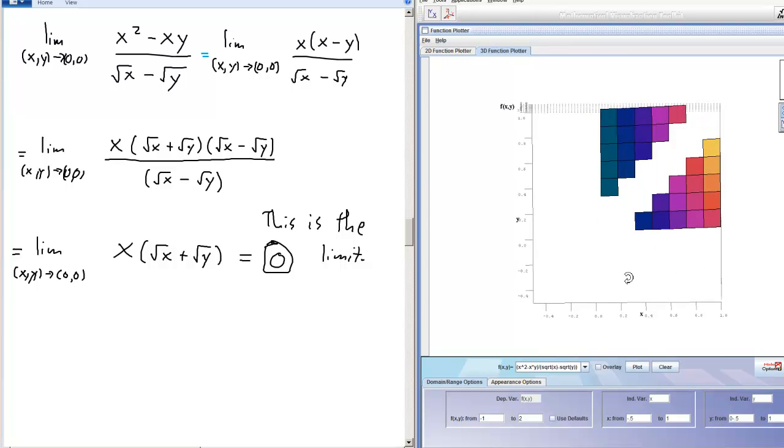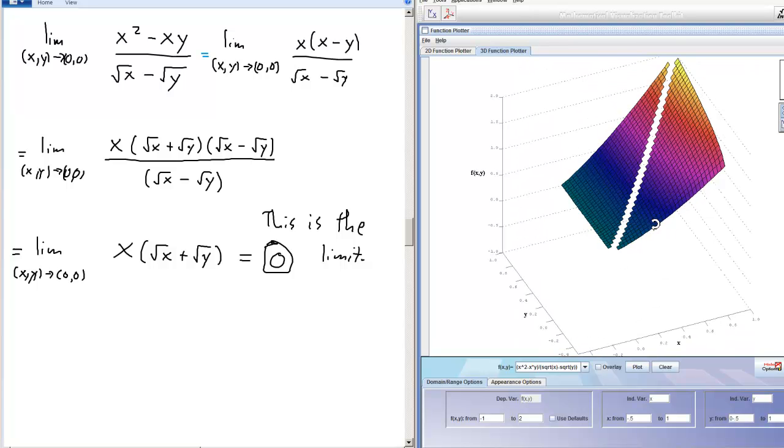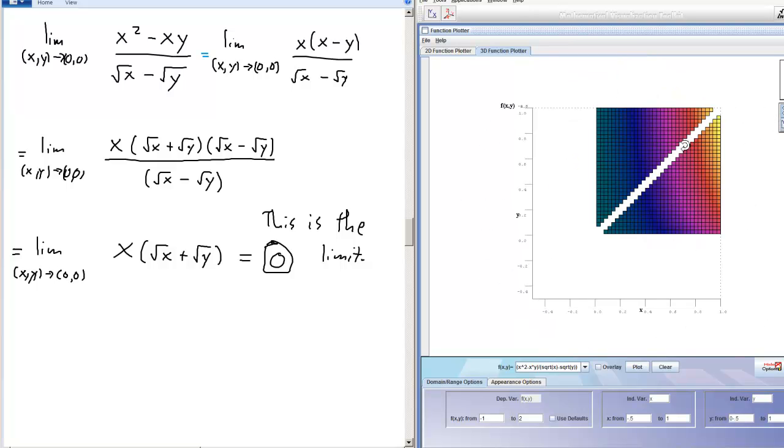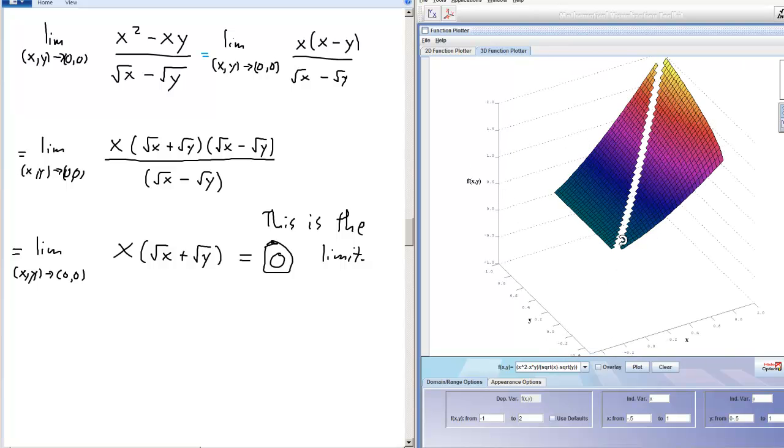If we look at this in 3D, we have this curved sort of plane with a cut down the middle. This cut is, of course, the line y equals x, because if y equals x, you have zero in the denominator and the whole function doesn't exist. But everything looks very smooth. There's no problems as we approach the origin. So that's the limit. It works.